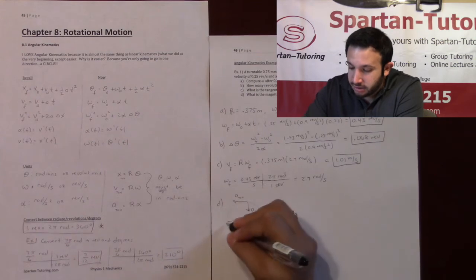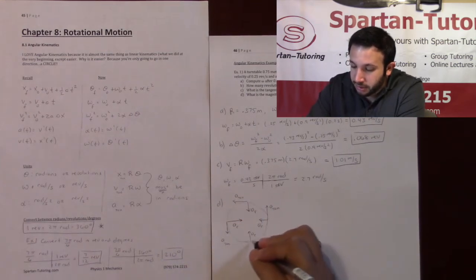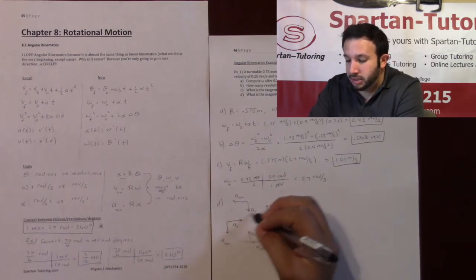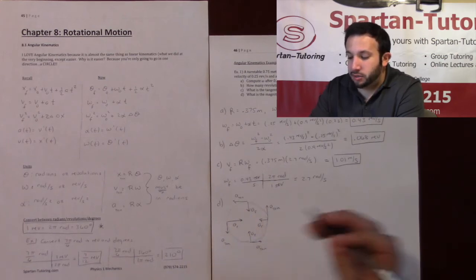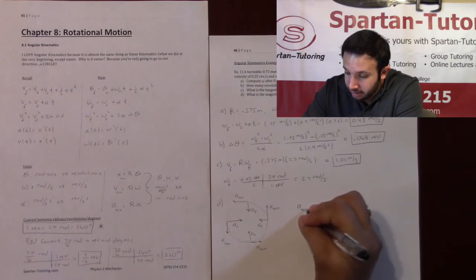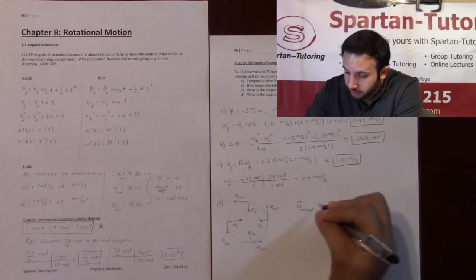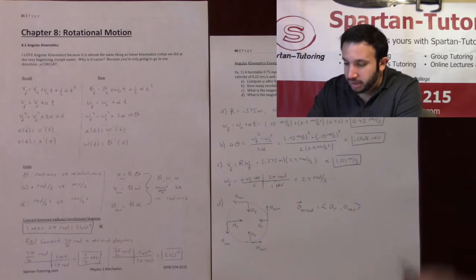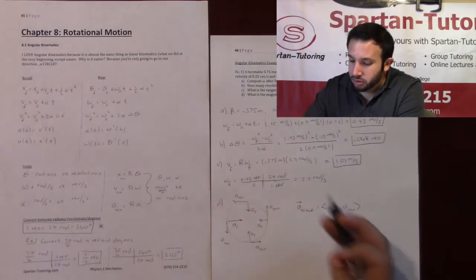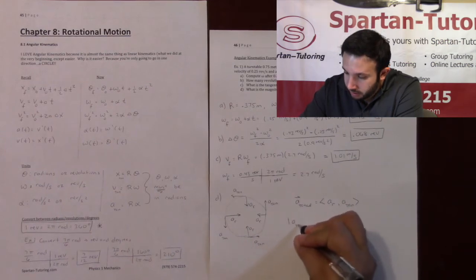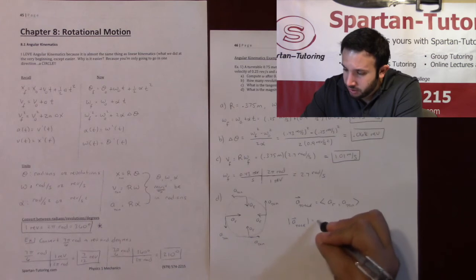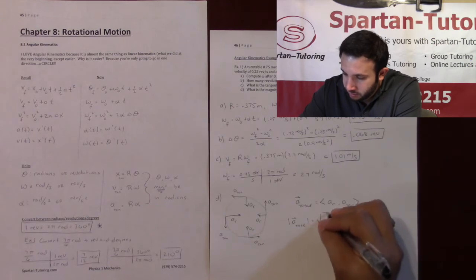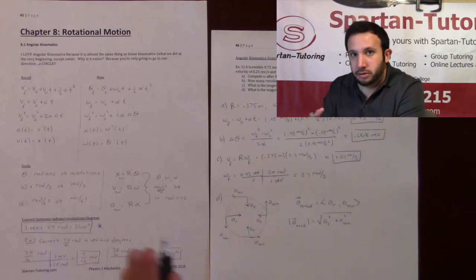Radial and tangential acceleration are always perpendicular, like x and y components, so the total acceleration is a vector: a_total = √(a_radial² + a_tangential²). Let's find each component separately.